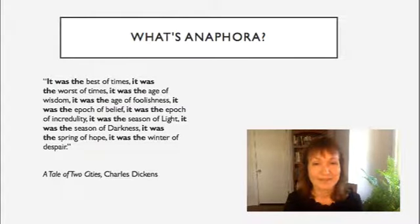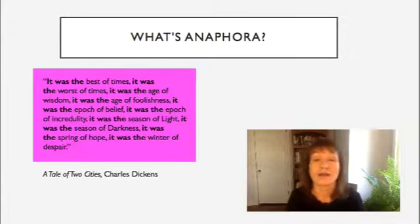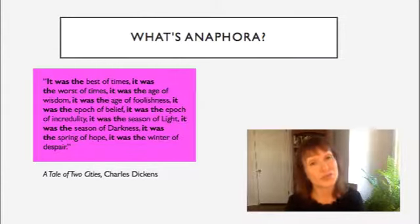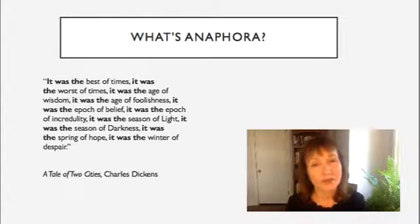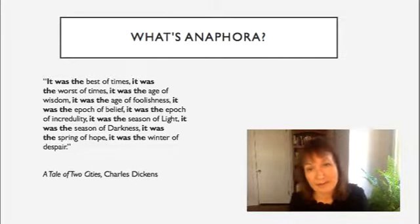What's anaphora? Charles Dickens used it in the very famous beginning of A Tale of Two Cities: 'It was the best of times. It was the worst of times. It was the age of wisdom. It was the age of foolishness. It was the epoch of belief. It was the epoch of incredulity. It was the season of light. It was the season of darkness. It was the spring of hope. It was the winter of despair.' Anaphora is a very effective technique because of the repetition — as a reader, we realize that something was happening over and over again. Dickens uses oxymorons — complete opposites — to show us the confusion of the time.